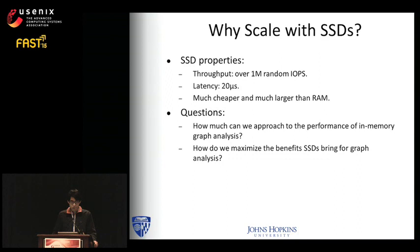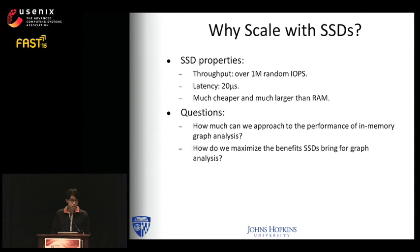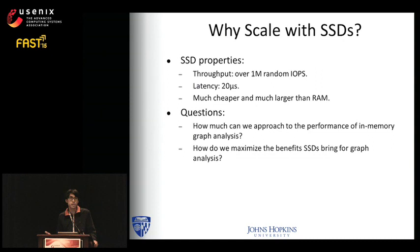Another option is to scale with SSDs. SSDs have very good random I/O performance compared with hard drives — today's state-of-the-art flash memory achieves over 1 million random I/Os per second, with much lower latency of around 20 microseconds. SSDs are also much cheaper and larger than RAM. Replacing hard drives with SSDs gives a significant performance boost, and two key questions are: how close can we get to in-memory performance, and how do we maximize the benefits SSDs bring to graph analysis?